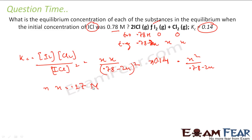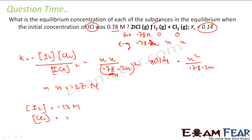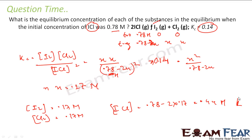That will be the unit of x. Because 0.78 is in M, the unit of x is also M. So x equals 0.17 M. The concentration of I₂ is x, that is 0.17 M. The concentration of Cl₂ is x, that is 0.17 M. The concentration of ICl is 0.78 minus 2x — you solve this to get 0.44 M.